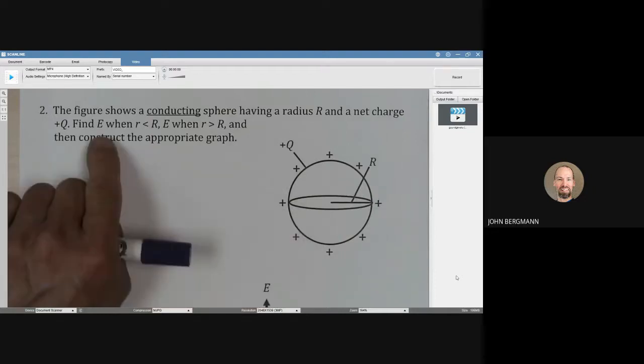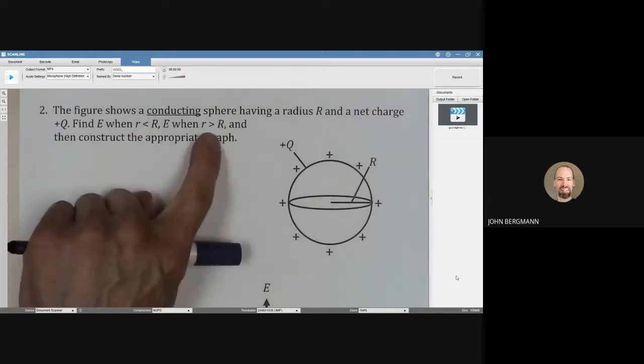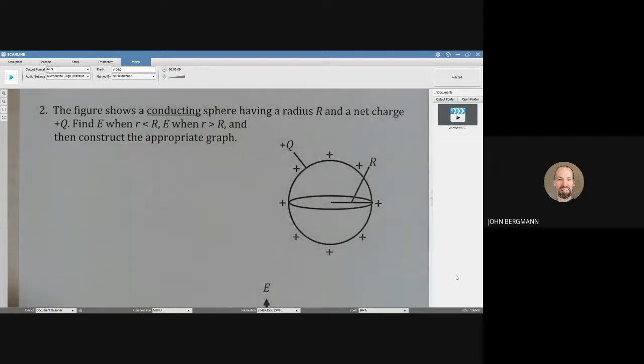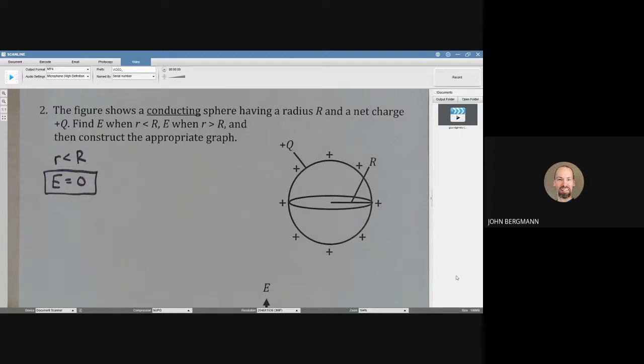We want to find the electric field when we are inside this cannonball and when we're outside it, and then we're going to draw a graph. The electric field inside is equal to zero. We just said that. Now let's prove that to you using Gauss's law.